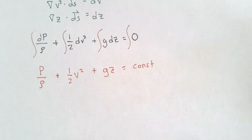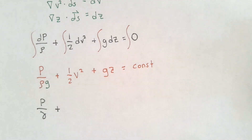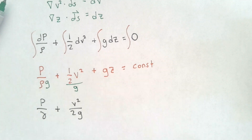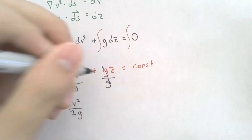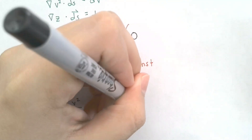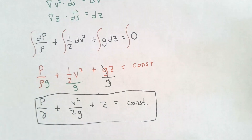If we divide all terms in this equation by gravitational acceleration, we get pressure divided by density times gravitational acceleration — and density times gravitational acceleration is equal to the specific weight of the fluid — plus velocity squared divided by two times gravitational acceleration, plus elevation with the g terms canceling out, all equal to a constant. And there you have it: we have derived Bernoulli's equation, arriving at the same equation learned earlier in class but following the differential formulation.